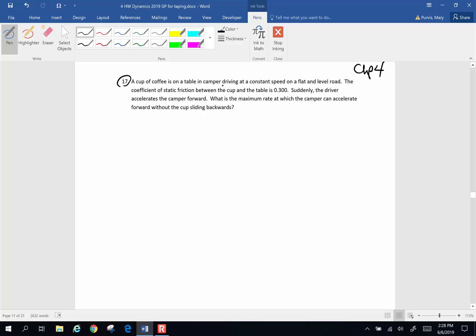A cup of coffee is on a table in a camper driving at a constant speed on a flat and level road. The coefficient of static friction between the cup and the table is 0.300. Suddenly the driver accelerates the camper forward and what is the maximum rate at which the camper can accelerate without the cup sliding backwards?